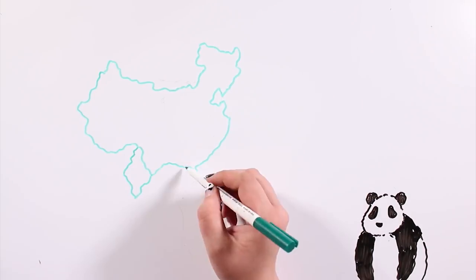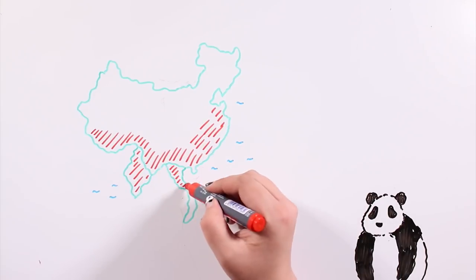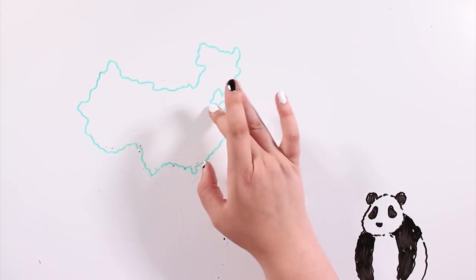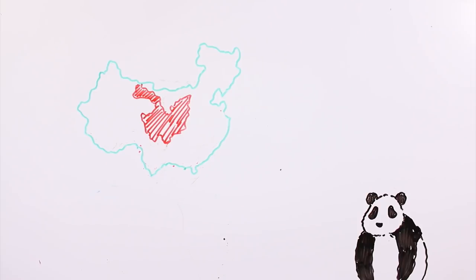A long time ago, giant pandas lived all around the south and east of China, in Myanmar and in northern Vietnam. With human alteration of their environment, right now they can only be found in the bamboo forests in the remote mountain regions of Sichuan, Shaanxi and Gansu, in China.